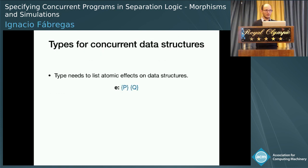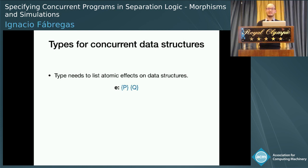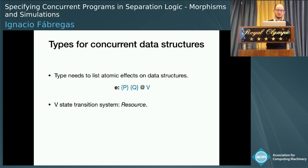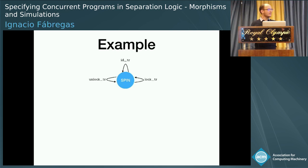Since we are doing concurrency, the type will also need to list the atomic effects on the data. So we need to extend our type with state transition systems that we will call resources. Let me show, in a very simple example, one resource.